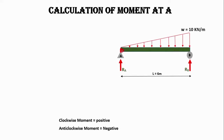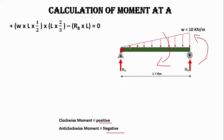To calculate the moment at point A, the sum of moments acting at point A will be zero. This triangular load will bend the beam in the clockwise direction and the support will resist in the anti-clockwise direction. Clockwise moment is considered positive and anti-clockwise negative. For the total load we use the area of a triangle: one-half base times height.